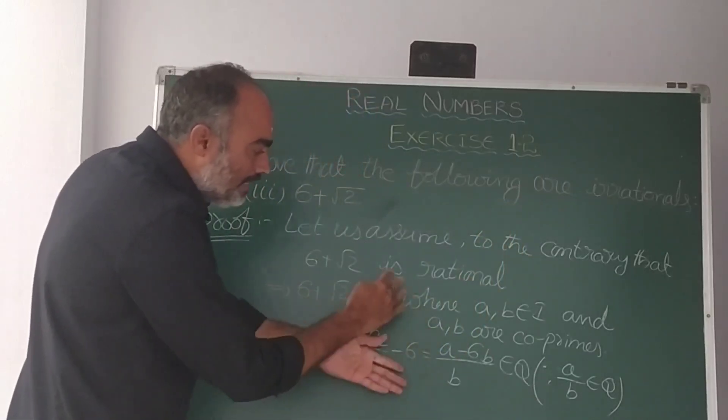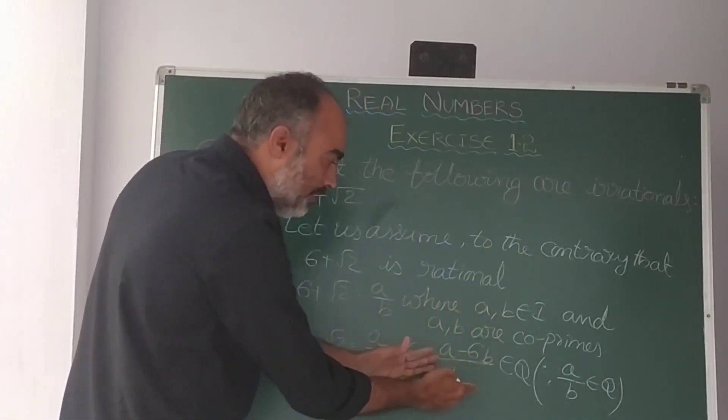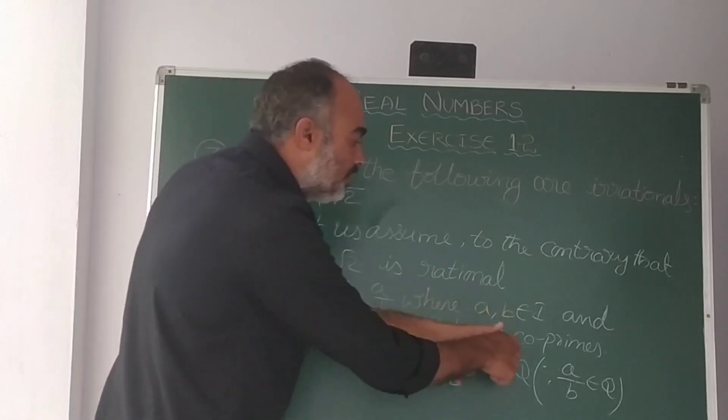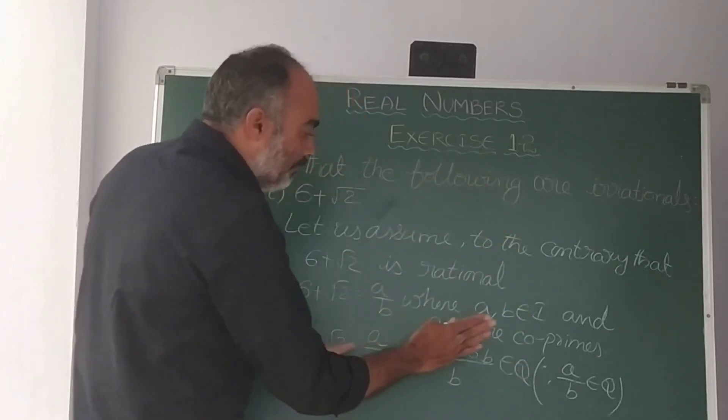A minus 6B by B is also rational. A by B is rational.